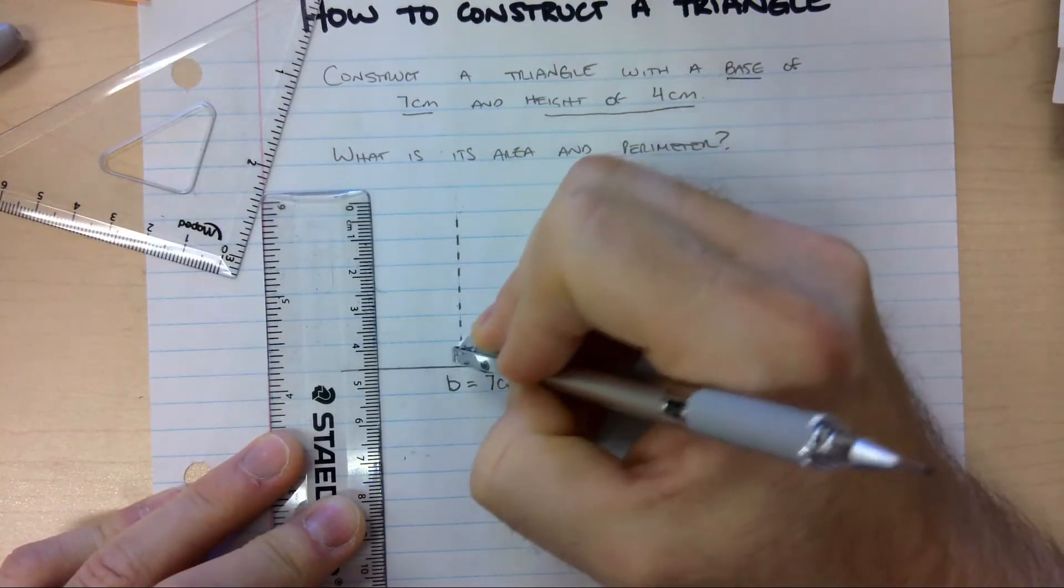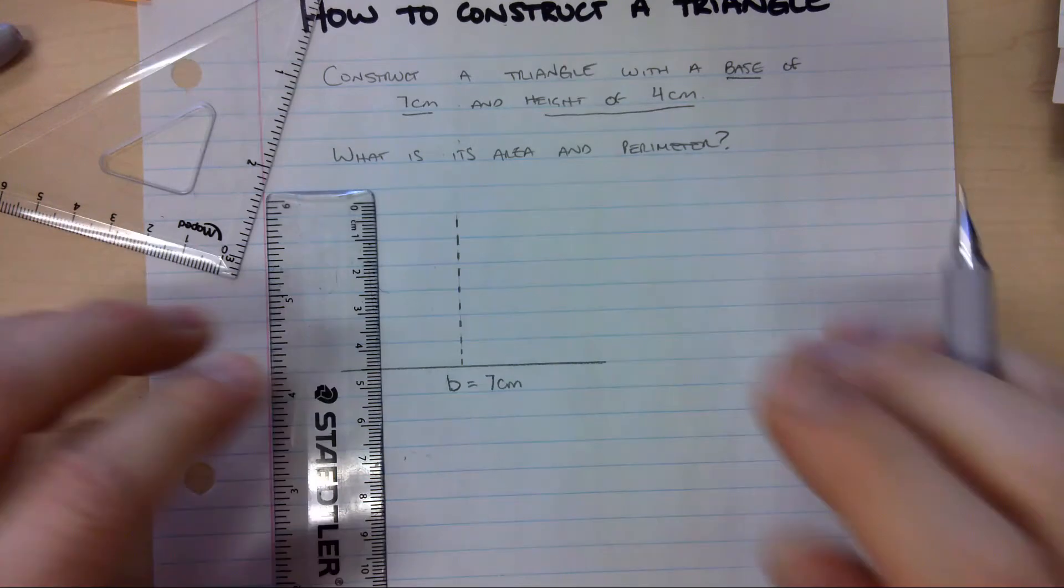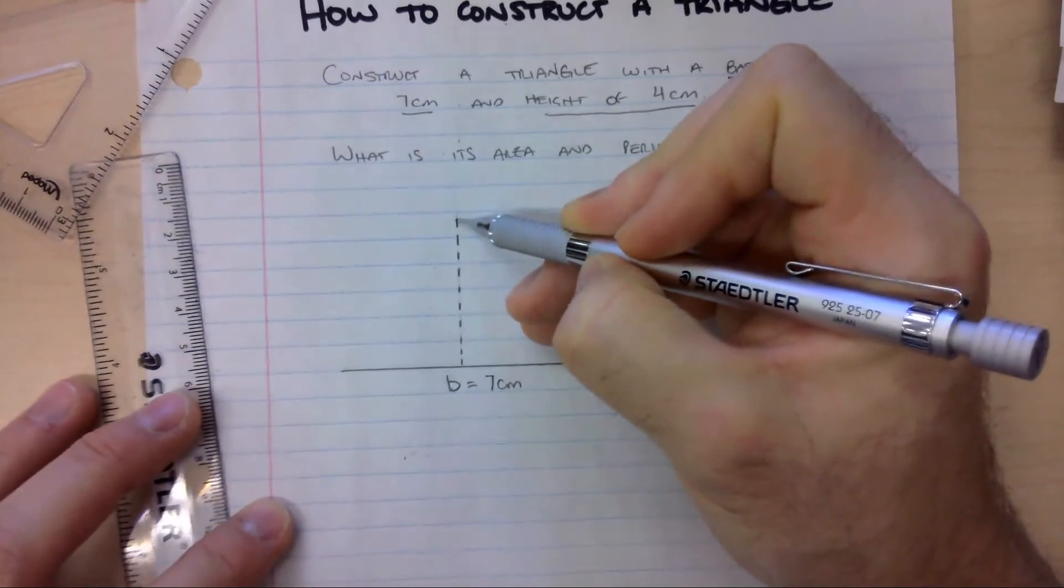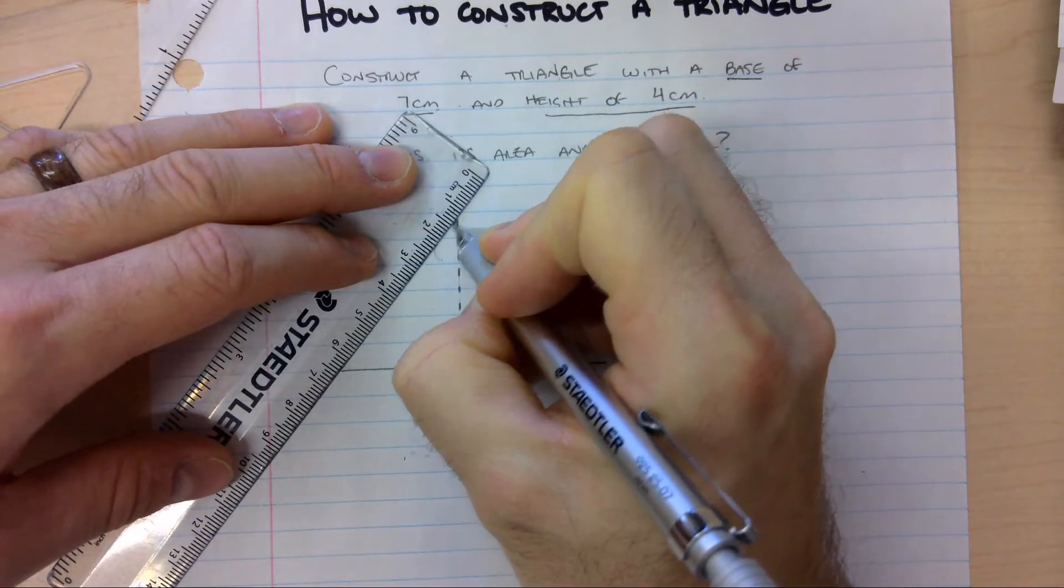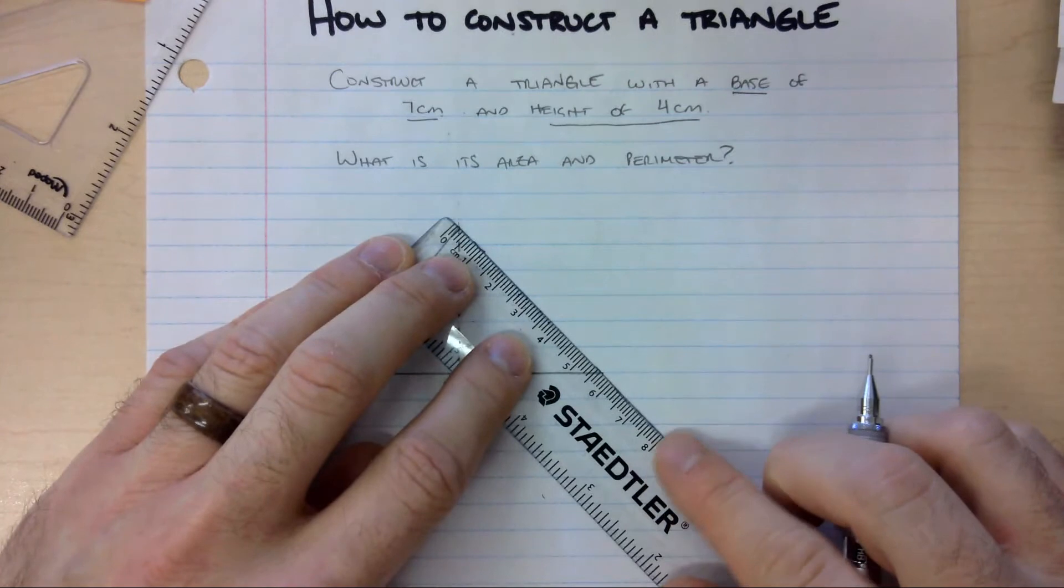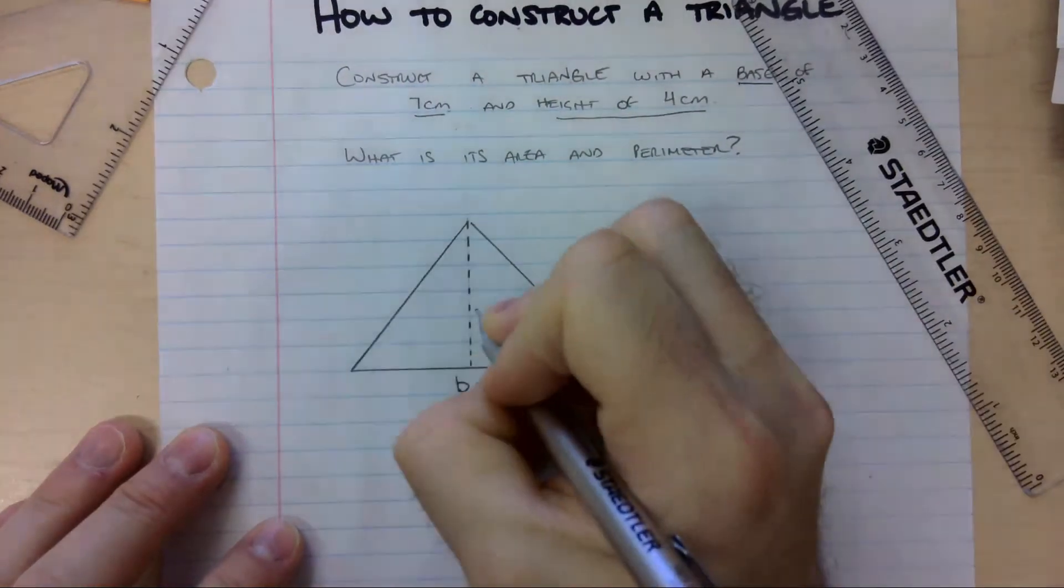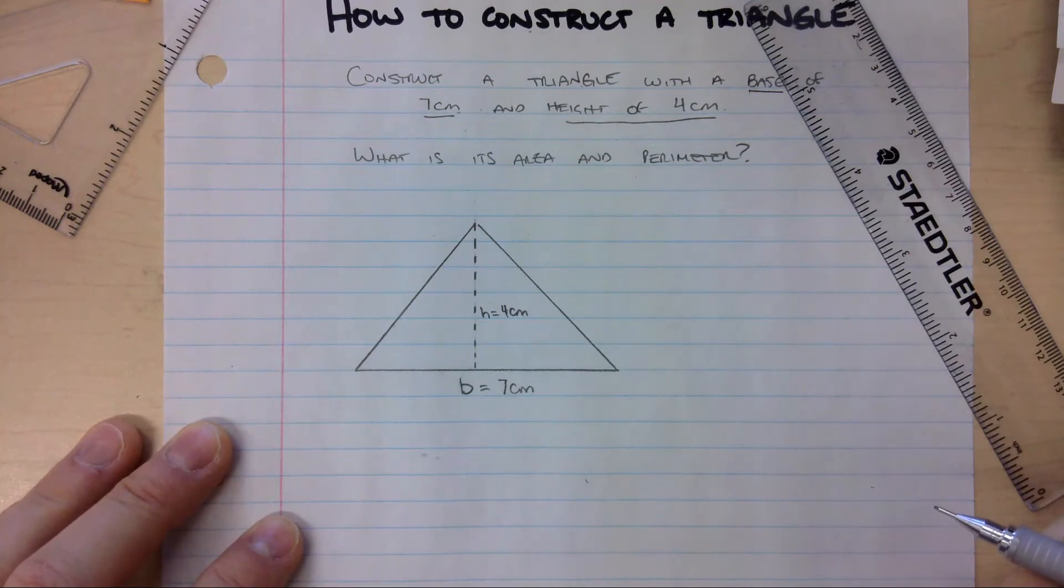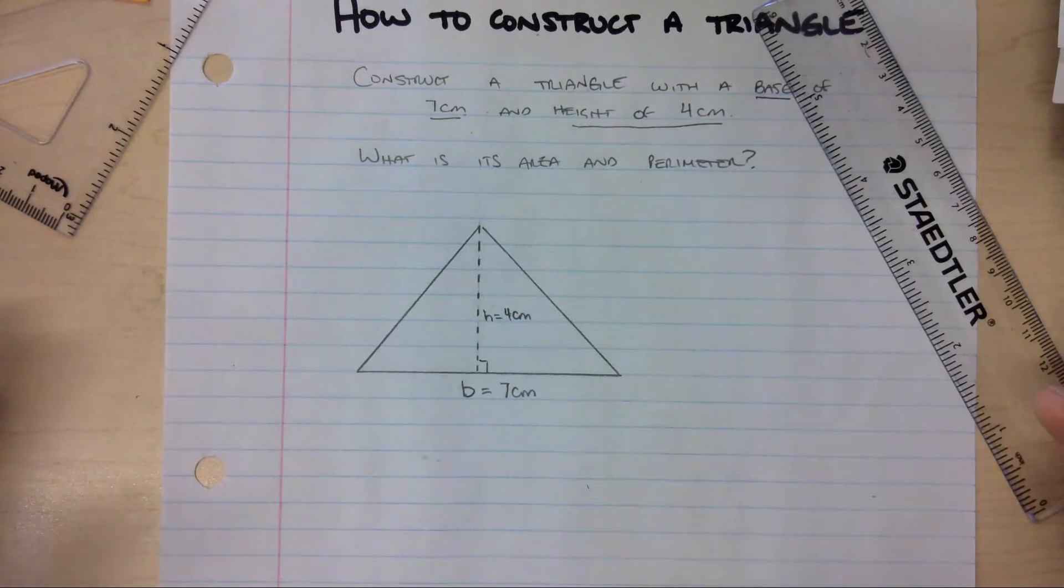That way, I'm not confusing my teacher and thinking that I think that that's a line or a side length of my triangle. So this is exactly where 4 centimeters is at the top of my height. All I'm going to do now is connect either side of my base to that height. I'm going to write in height equals 4 centimeters so that I don't forget and I can show my teacher that I understand where the height is and that it creates a 90 degree angle to my base. And that is how you properly construct a triangle.